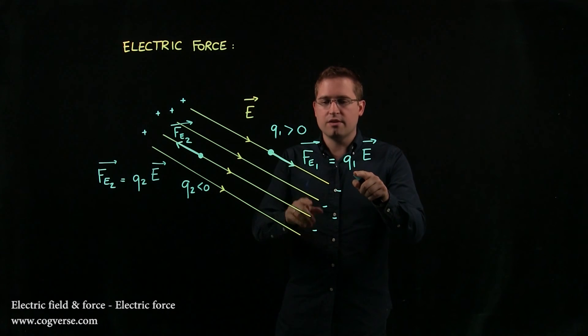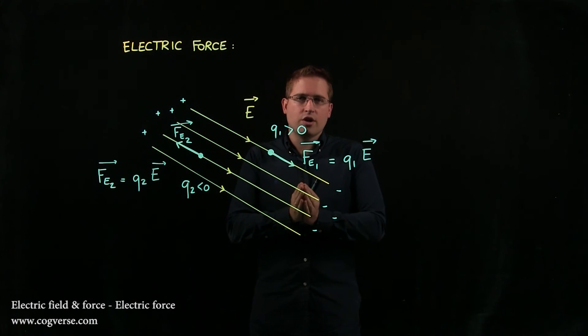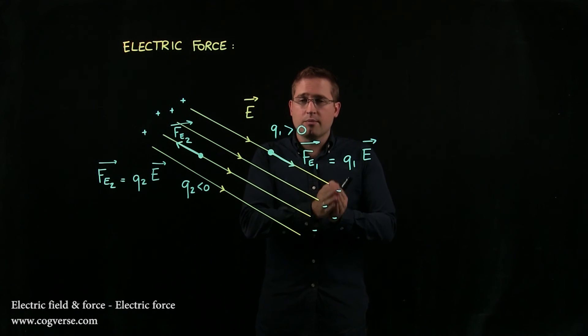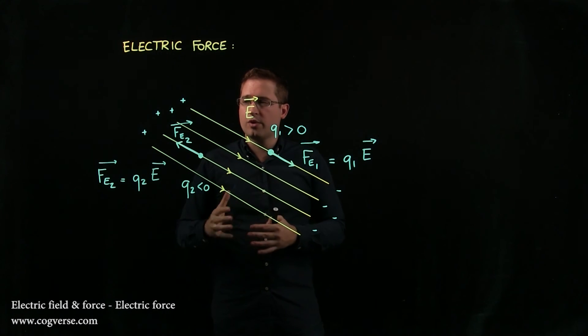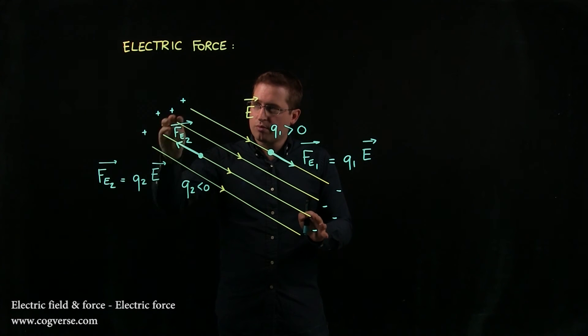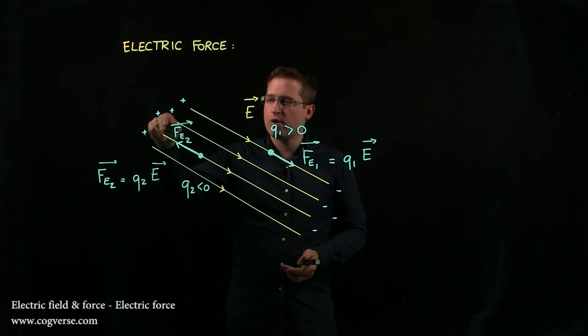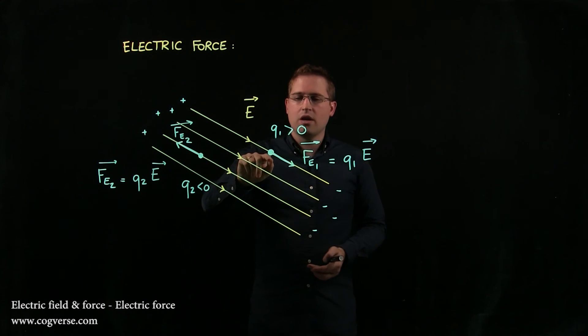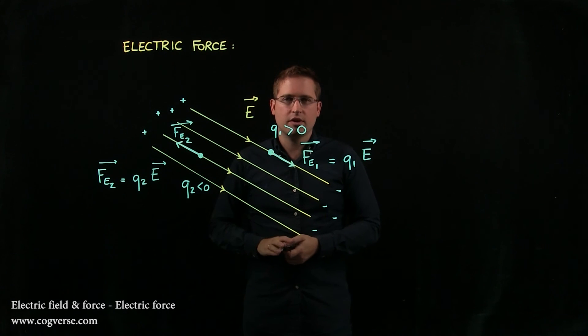Whereas here, with Q1 positive, Fe1 and E point in the same direction. So you can argue it either with the equation, if you like that more, if you know the sign of Q1 or Q2. But you can also argue it with the fact that the electric field goes from high potential to low potential. So that this area will attract a negative charge and repel a positive one. And therefore, you know the direction of the electric force.